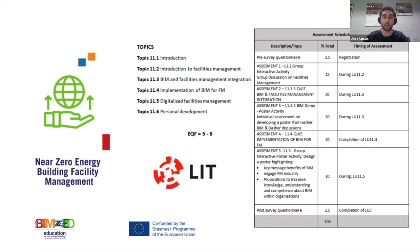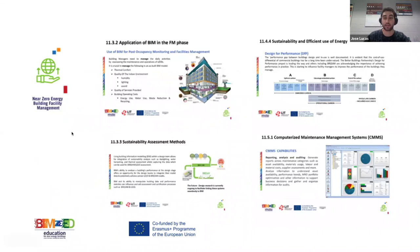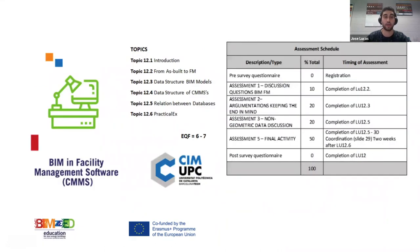Learning unit 11 includes examples of activities and assessments, and covers topics such as CMMS — computerized maintenance management systems — and how they are connected to a BIM model. The final learning unit, learning unit 12, deals exclusively with BIM models in facility management services: how to start with the as-built model and put it into a facility management tool, and how the data structure should be organized to meet what the CMMS requires.